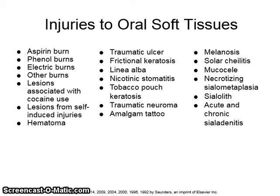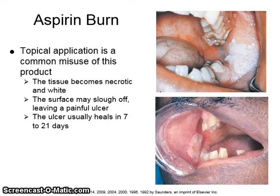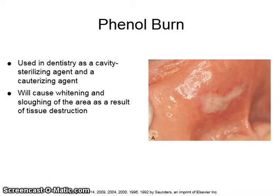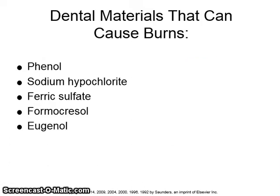There are many causes of injuries to oral soft tissues. An aspirin burn is caused by the topical application of aspirin, which is a common misuse of this product. The tissue becomes necrotic and white; the surface may slough off, leaving a painful ulcer that usually heals in 7 to 21 days. A phenol burn is caused by phenol used in dentistry as a cavity sterilizing agent and a cauterizing agent, causing whitening and sloughing of the contacted area. Dental materials that can cause burns include phenol, sodium hypochlorite, ferric sulfate, formacresol, and eugenol.